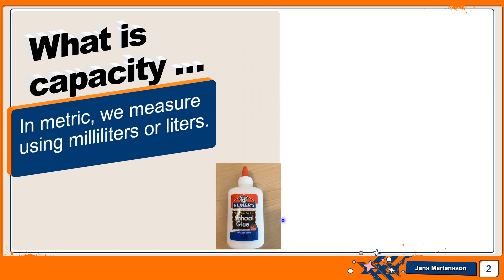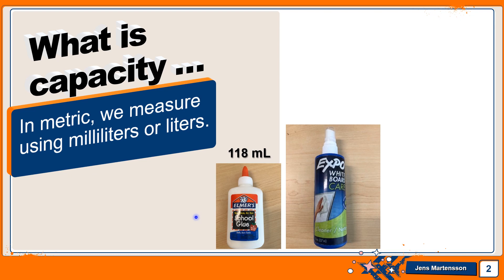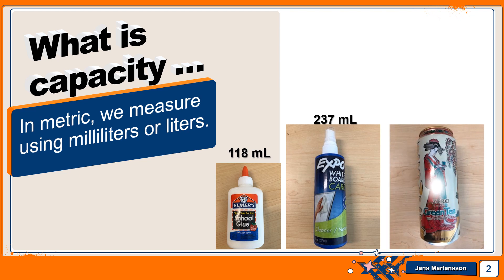So let's explore around our room. A bottle of glue contains 118 milliliters of glue. Dry erase board liquid contains 237 milliliters of liquid. And finally, we have a can of green tea that contains 680 milliliters of tea.